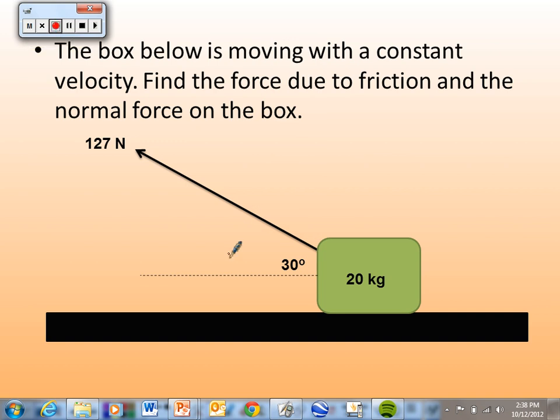Alright, we're going to do this example problem from the notes. In this particular situation, the box below is moving with a constant velocity, so we're going to find the force due to friction acting on the box and the normal force acting on the box.